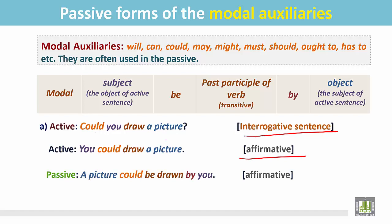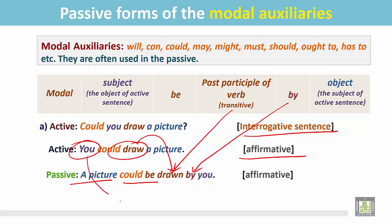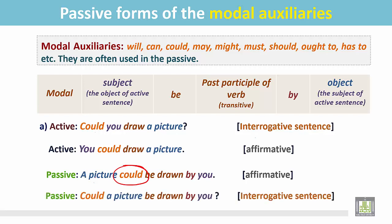In the passive sentence, the object of the active sentence becomes the subject. 'A picture' is now the subject. Then the modal with 'be', and the transitive verb is in the past participle form — 'drawn' — followed by the preposition, and the subject of the active sentence becomes the object in the passive: 'you'. So we get: 'A picture could be drawn by you.' The sentence is still in the affirmative form. Now change this affirmative sentence into an interrogative sentence by placing the modal at the beginning: 'Could'.